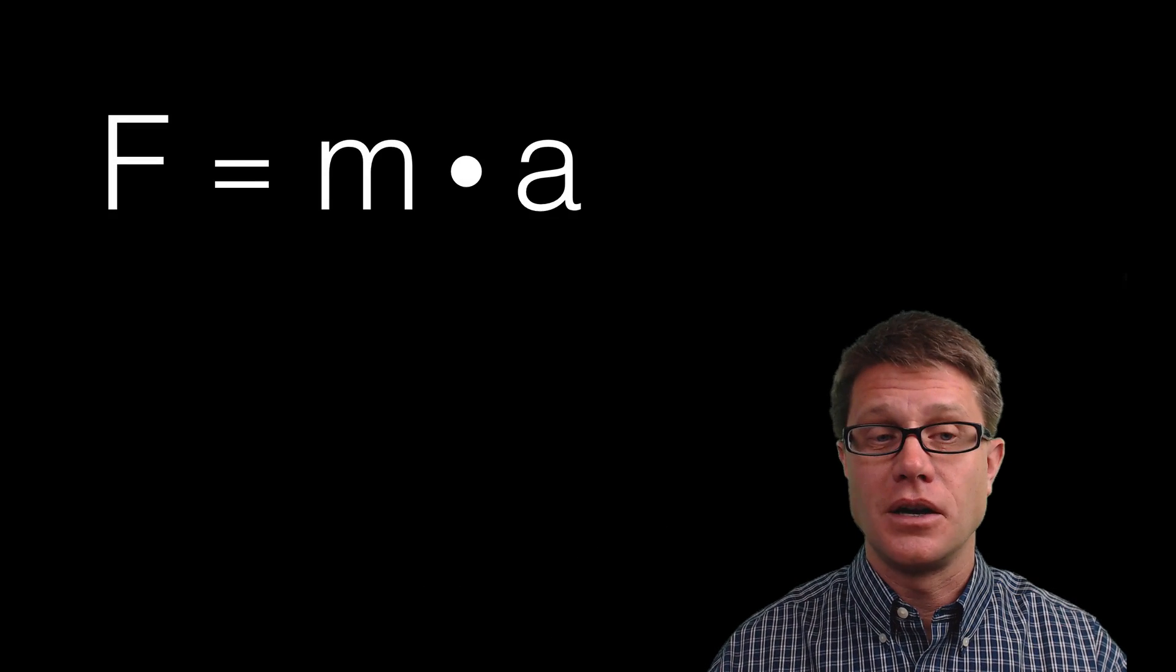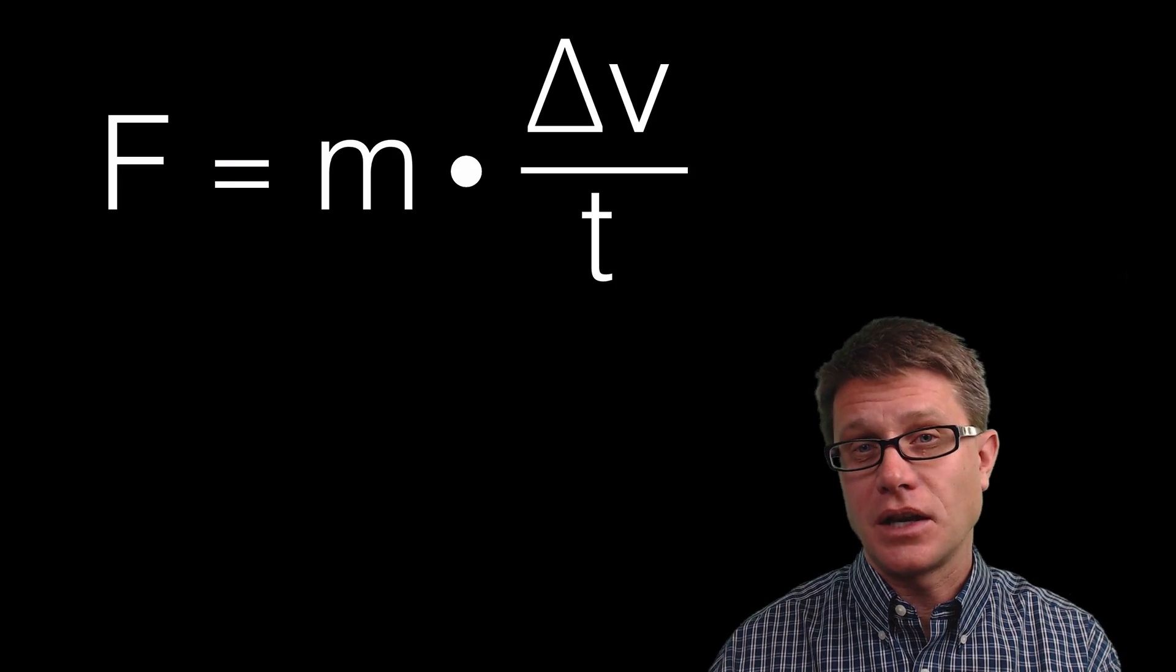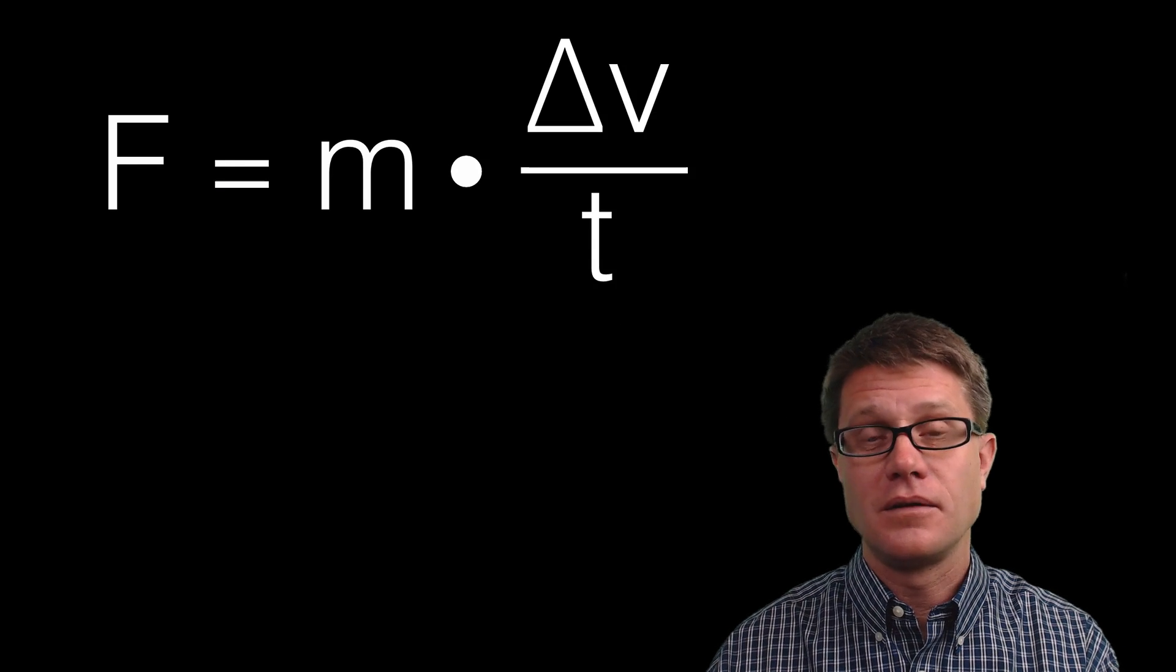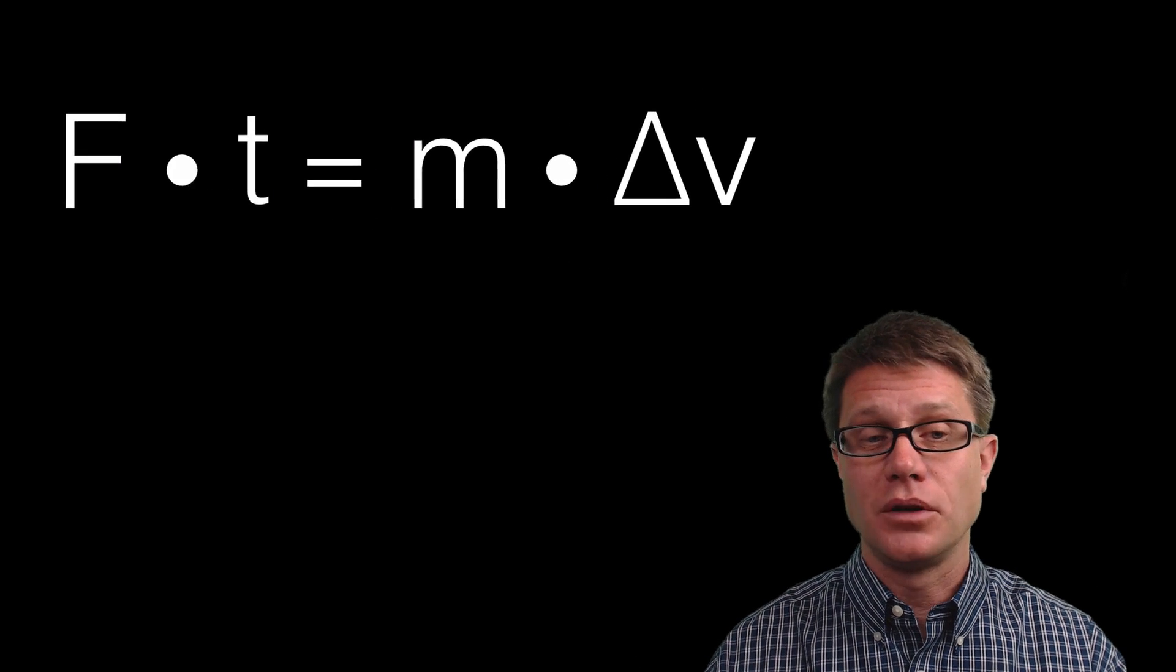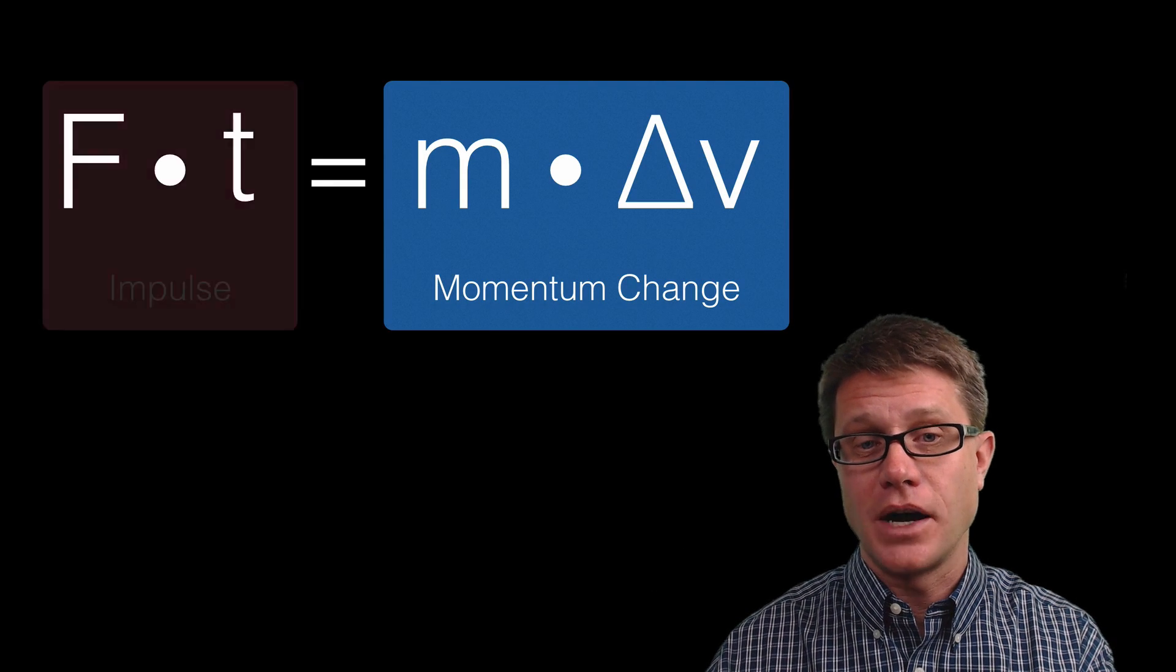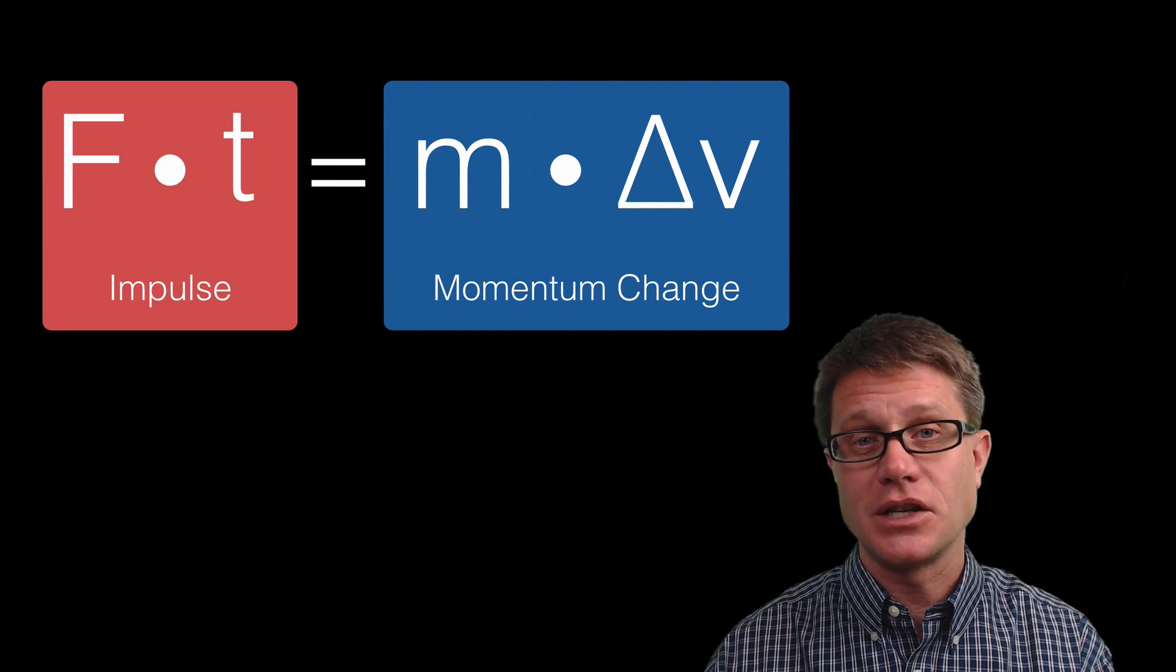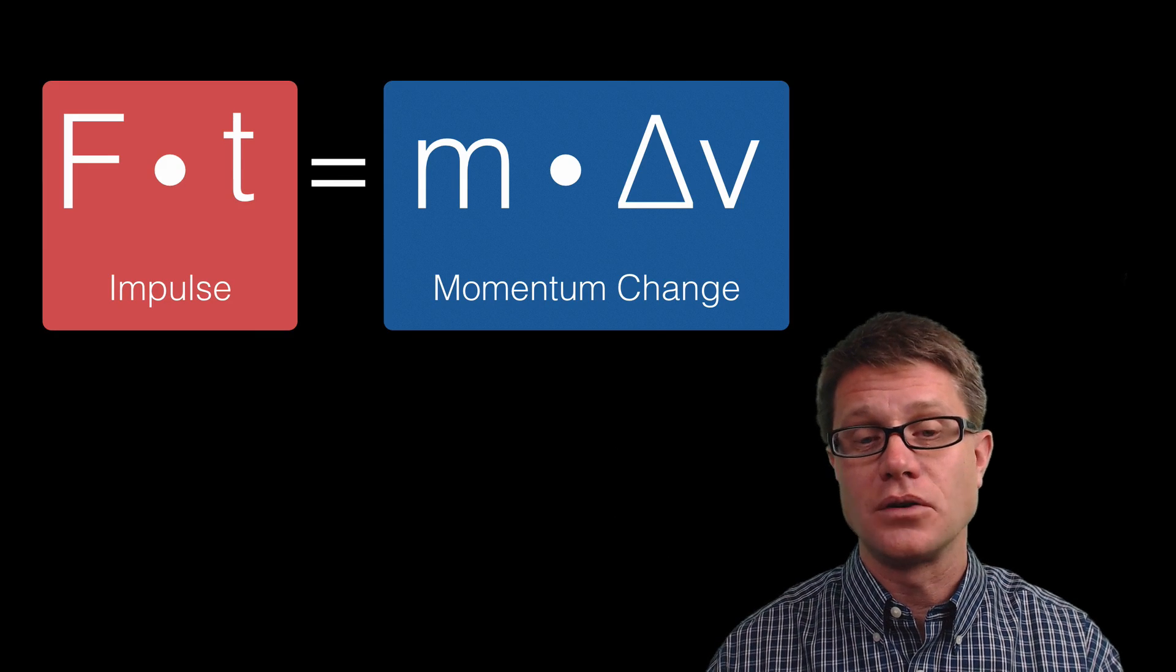And like I have showed you in the impulse video, if force is equal to mass times acceleration, if we say acceleration is the change in velocity over time, and then we simply multiply both sides times time, we now have momentum change on the right and we have got impulse on the left. But this would be for a translational system where all the motion is in one direction.